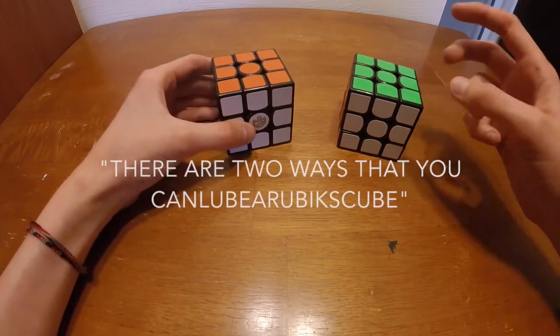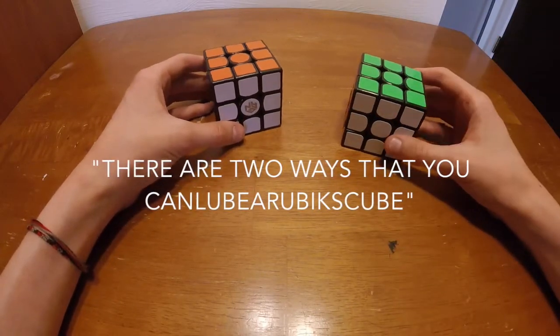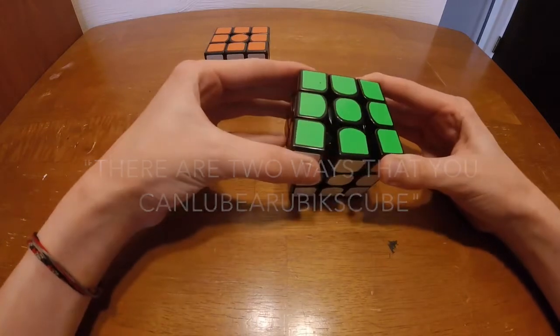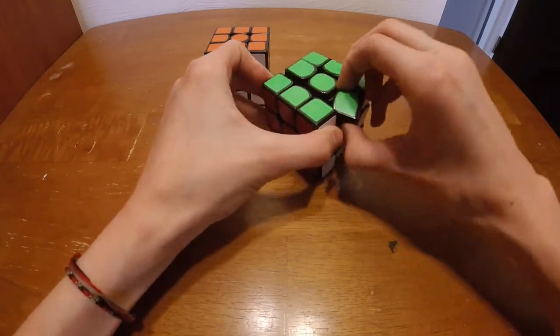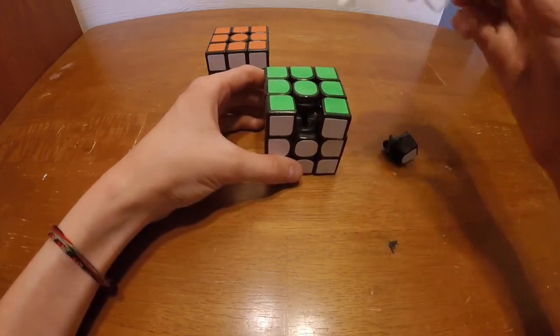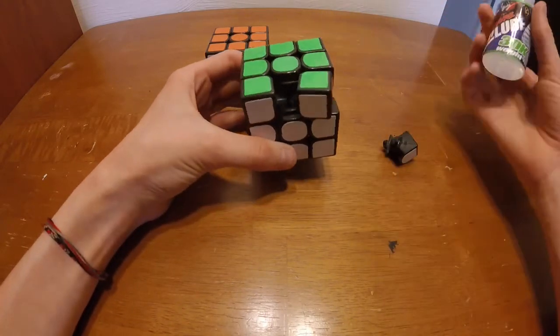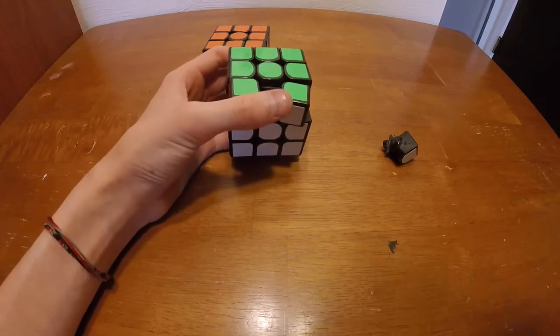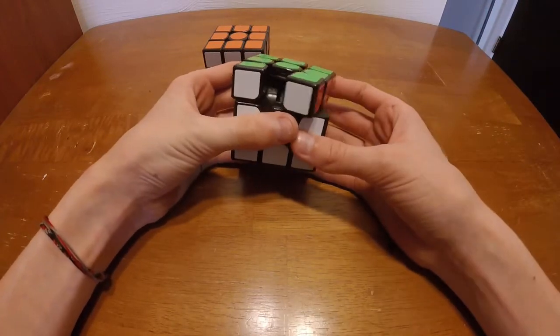So there are two ways that you can lube a Rubik's Cube. The first way is you can just pop out an edge and then take some lube and put it right in there, and it would be a lot better but not as good as it could be.